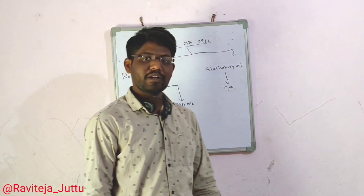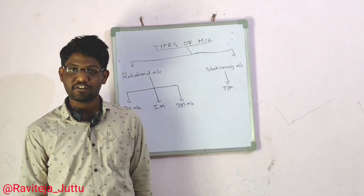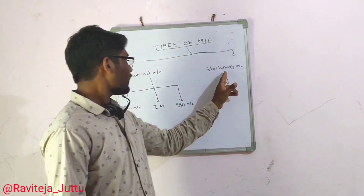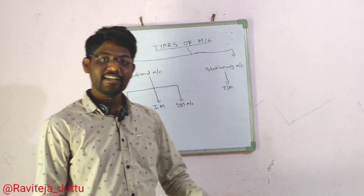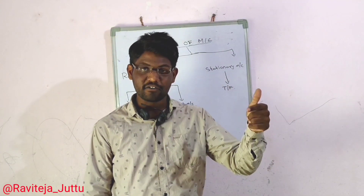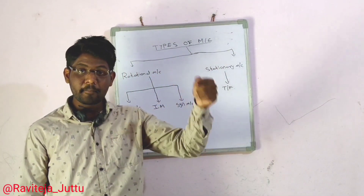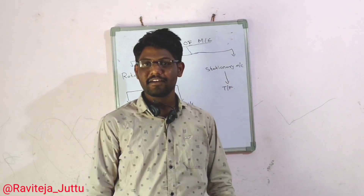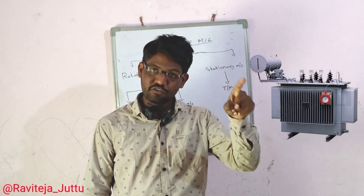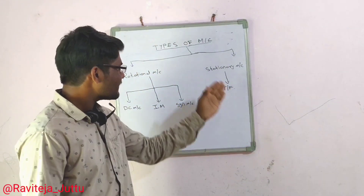We will look at types of machines. Basically there are two types: one is a stationary machine and one is a rotational machine. A stationary machine means the rotor part is absent. The transformer is an example of a stationary machine, as the rotor part is absent.